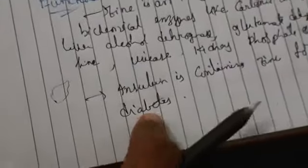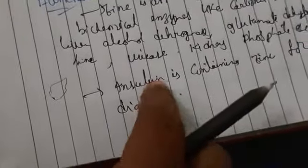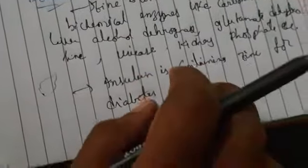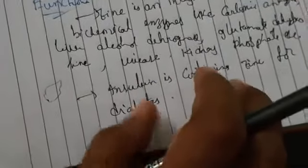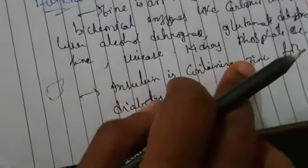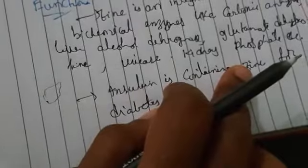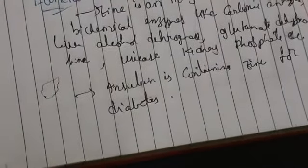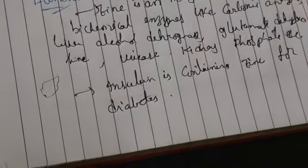In leukemia, the zinc content of leukocytes (white blood cells) is reduced to almost 10% of the normal amount, which leads to various diseases.